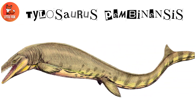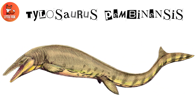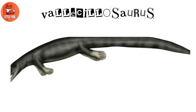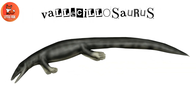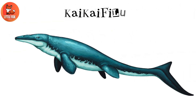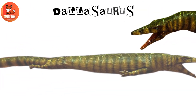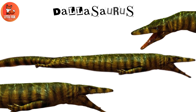Number 33: Tylosaurus pambinensis. Number 34: Valsilosaurus. Number 35: Kykephilu. Number 36: Dallosaurus.